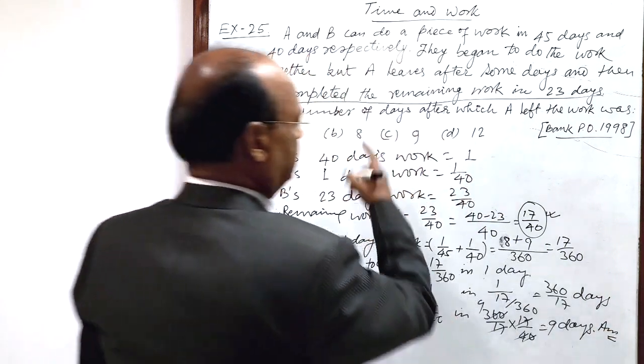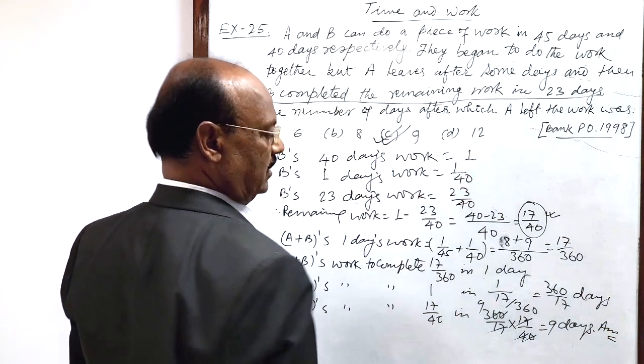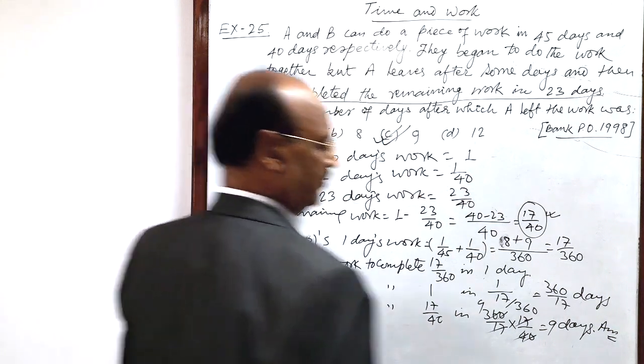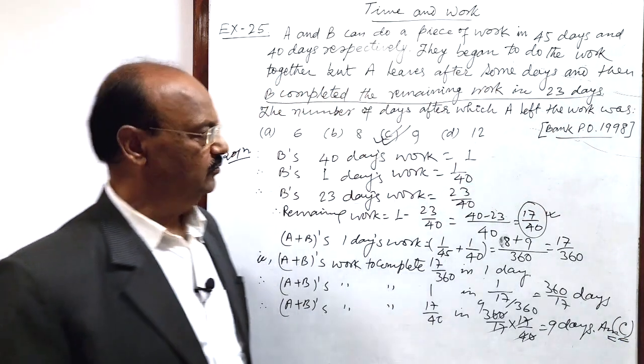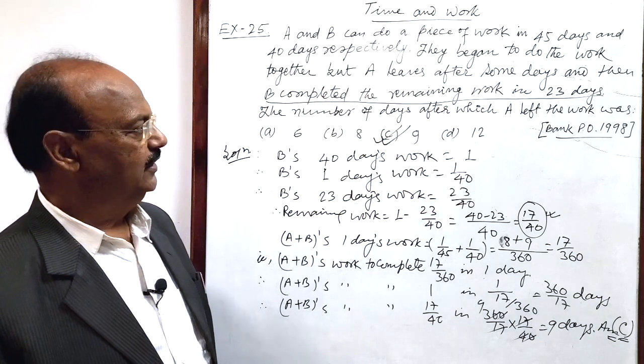Correct. So which option is correct? Option number C is correct. Therefore, answer is C. 9 days. Clear? Very simple? Okay.